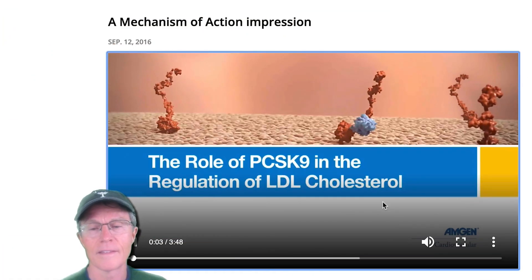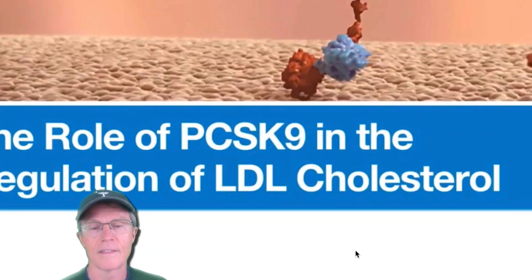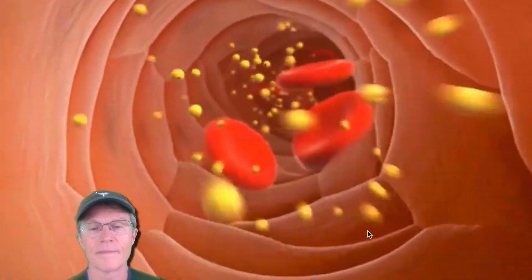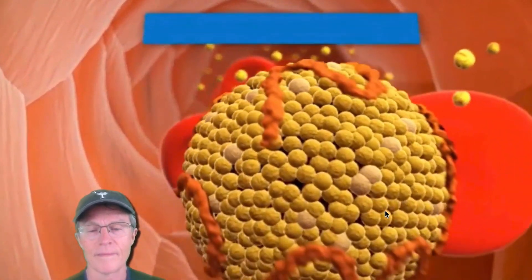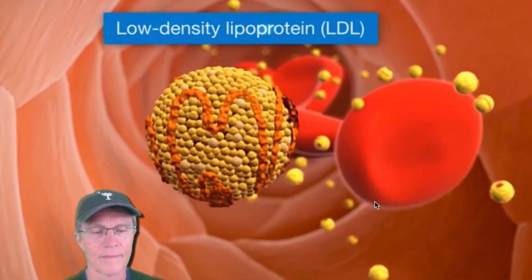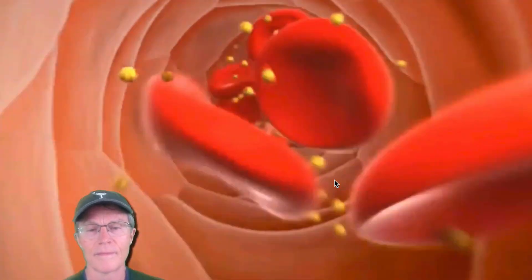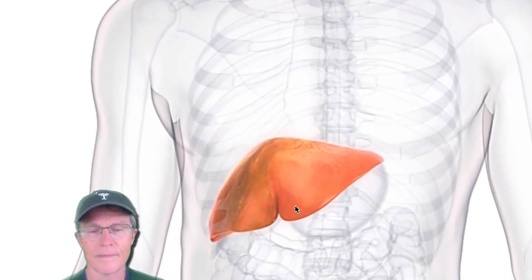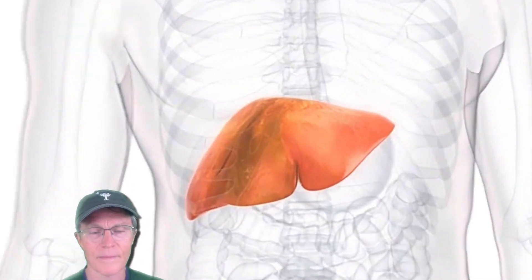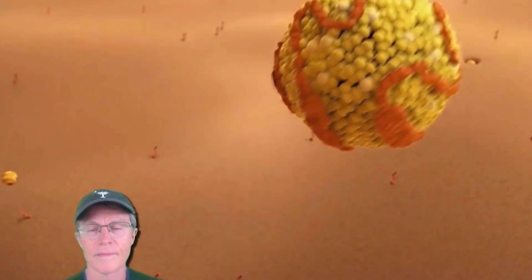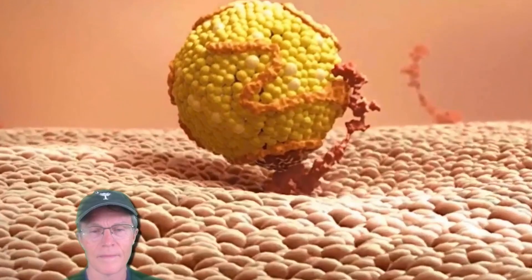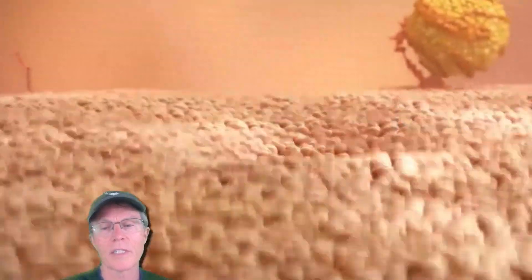The role of PCSK9 in the regulation of LDL cholesterol. Cholesterol is transported in the blood by lipoprotein particles, of which one major group is low-density lipoprotein or LDL, an important risk factor for atherosclerotic disease. The liver is the gatekeeper of plasma LDL levels and is responsible for its clearance and catabolism. Hepatocytes express LDL receptors that bind LDL and remove it from the plasma. These are the receptors.